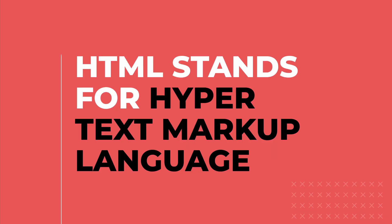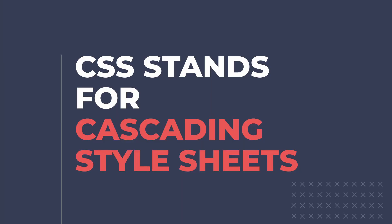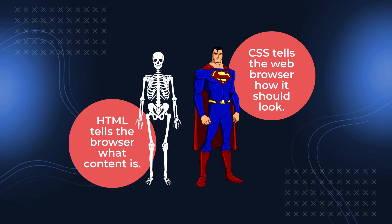HTML stands for hypertext markup language — it marks up text. And CSS is a little bit less of a mouthful; it stands for cascading style sheets. The most important part of the term is "style sheets." If HTML tells a web browser what a piece of content is, CSS tells a web browser how a piece of content should look.